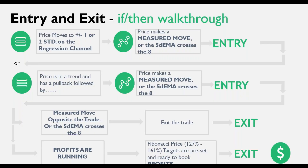We're going to start with our entry-to-exit walkthrough. When the price moves to either the plus or minus one, two, or the standard deviation on the regression channel, that is a signal to look to get in when you get a measured move that confirms that — that's our first entry. We have secondary entries, but usually with Forex trading I'm looking for it to be overbought or oversold. Our exits are either we get a measured move opposite the trade, or we get out at the Fibonacci levels, which we can preset once we have a measured move.